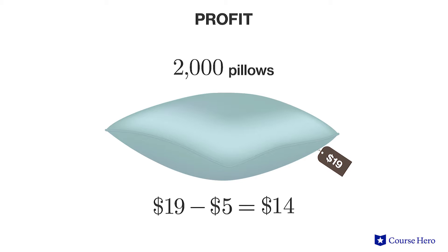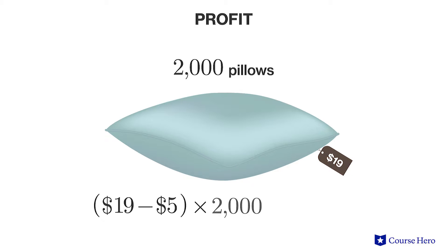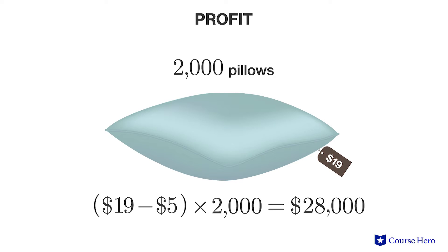If the company sells 2,000 pillows, their profit can be calculated as $19 minus $5, times 2,000 units. Using this method of calculation, the company's profit is $28,000.